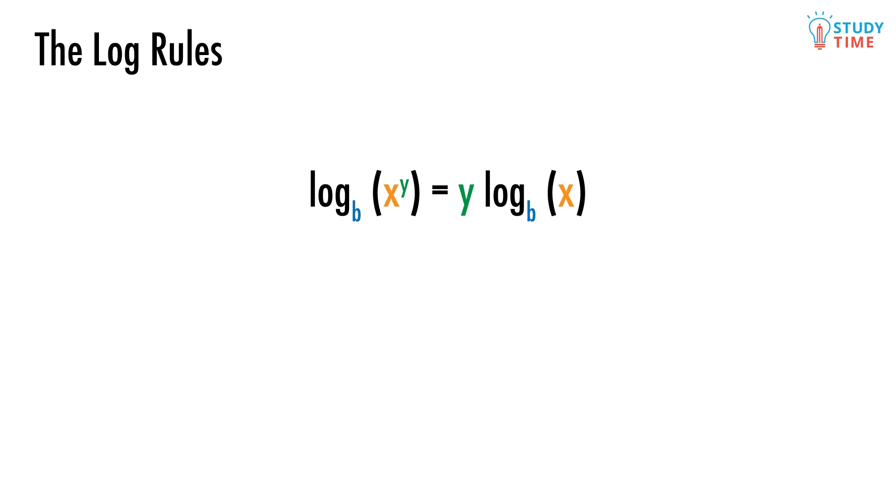The third and final log rule works a little differently. We need to use it whenever the argument of a log involves a power like this. Log base b of x to the power of y equals y times log base b of x. So we can just take whatever that power is and we're free to shift it to the front of the log expression.